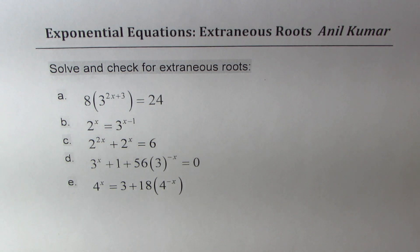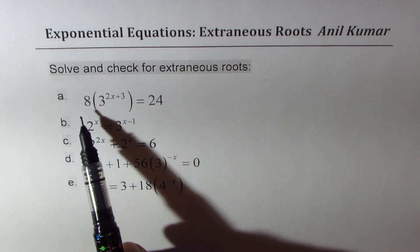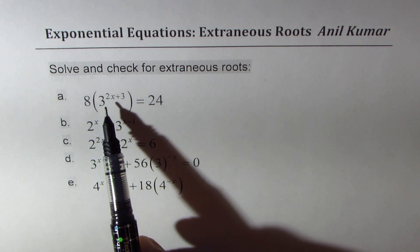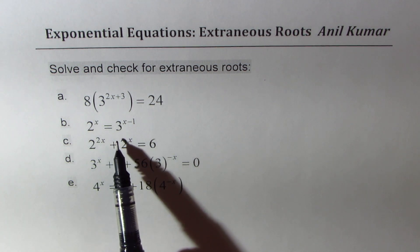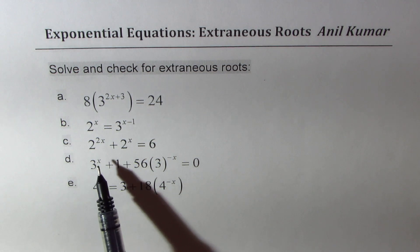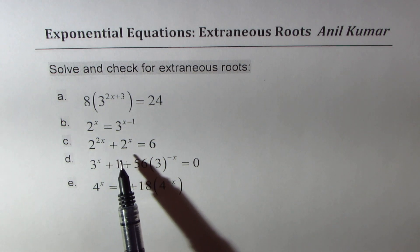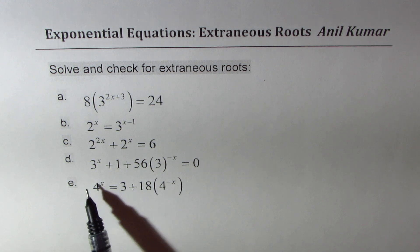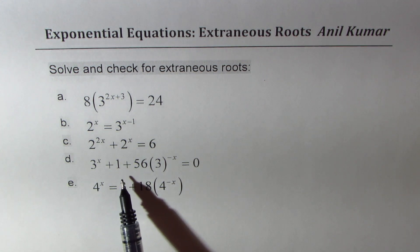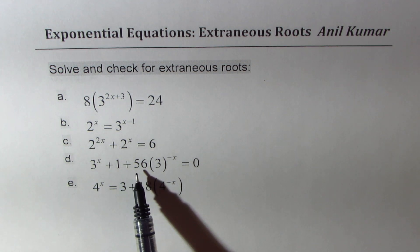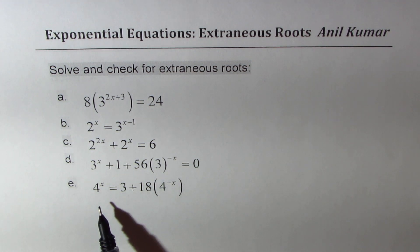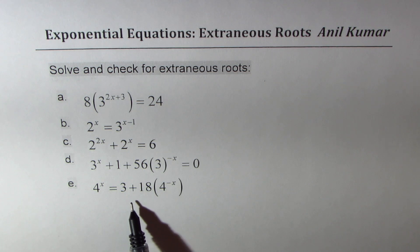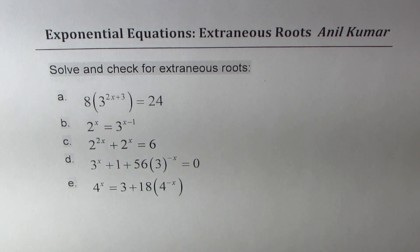The question here is to solve and check for extraneous roots. The five equations are: 8 times 3 to the power of 2x plus 3 equals 24; 2 to the power of x equals 3 to the power of x minus 1; 2 to the power of 2x plus 2 to the power of x equals 6; 3 to the power of x plus 1 plus 56 times 3 to the power of minus x equals 0; and 4 to the power of x equals 3 plus 18 times 4 to the power of minus x.